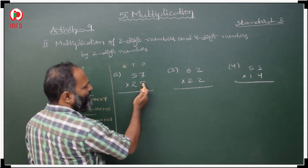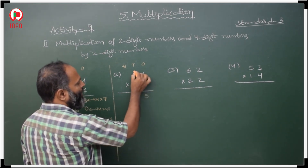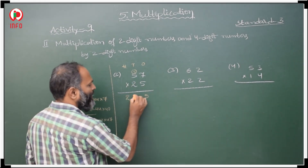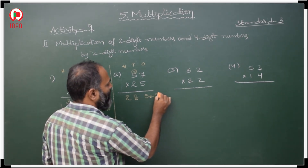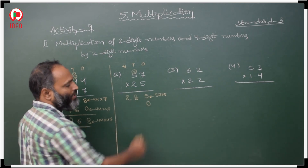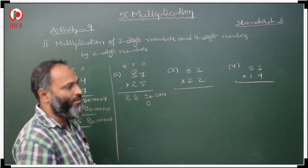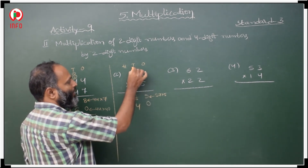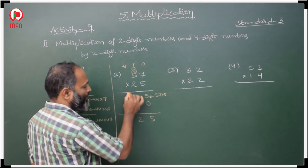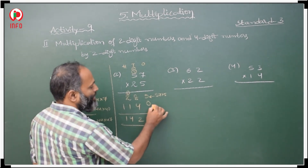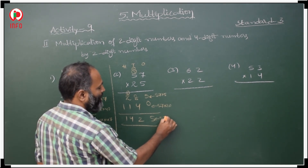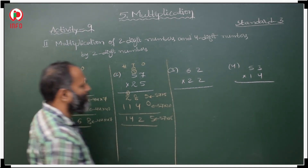In the same way: first start with 5. 5 sevens are 35, carry 3; 5 fives are 25 plus 3 is 28. This is the product of 57 with 5. Now with 2 in tens place, keep 0 first. 2 sevens are 14 carry 1; 2 fives are 10 plus 1 is 11. This is the product of 57 with 20, and the complete product of 57 with 25.